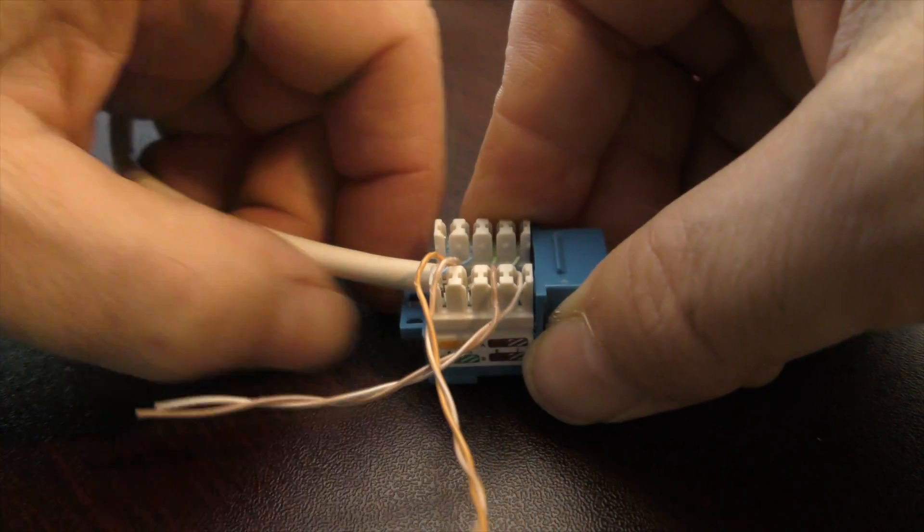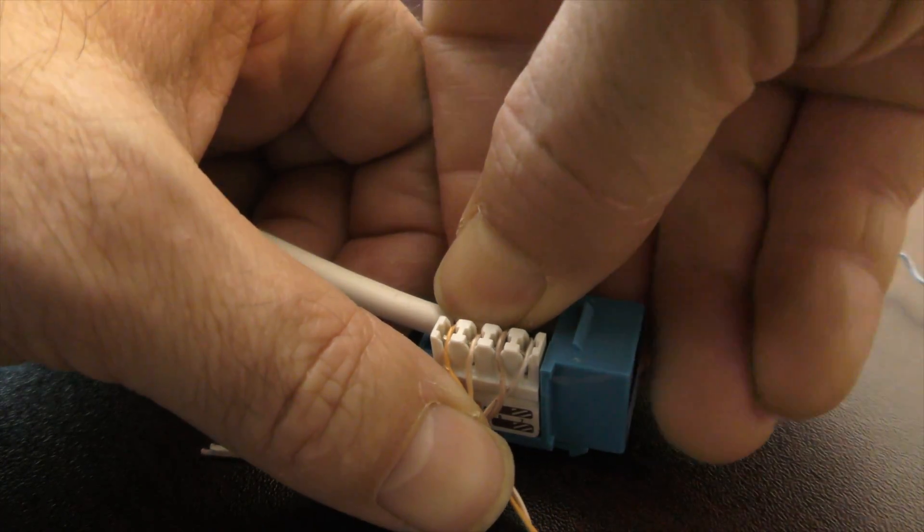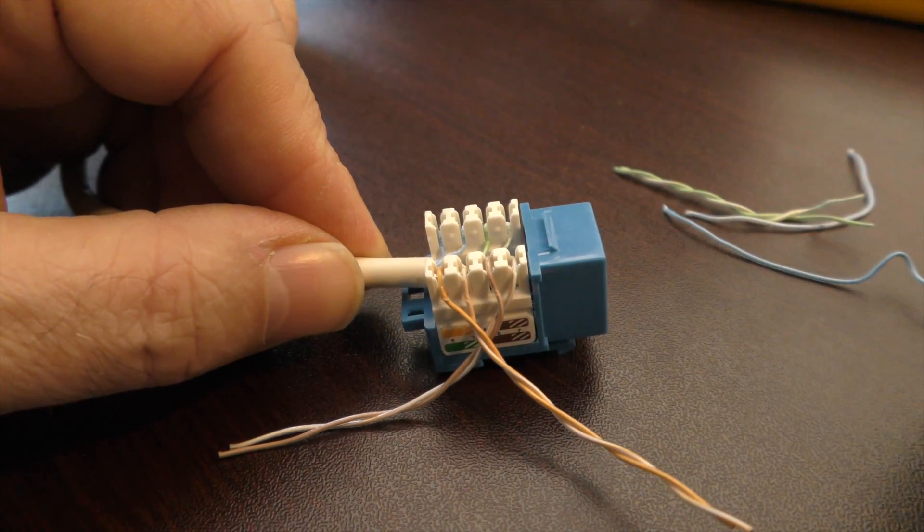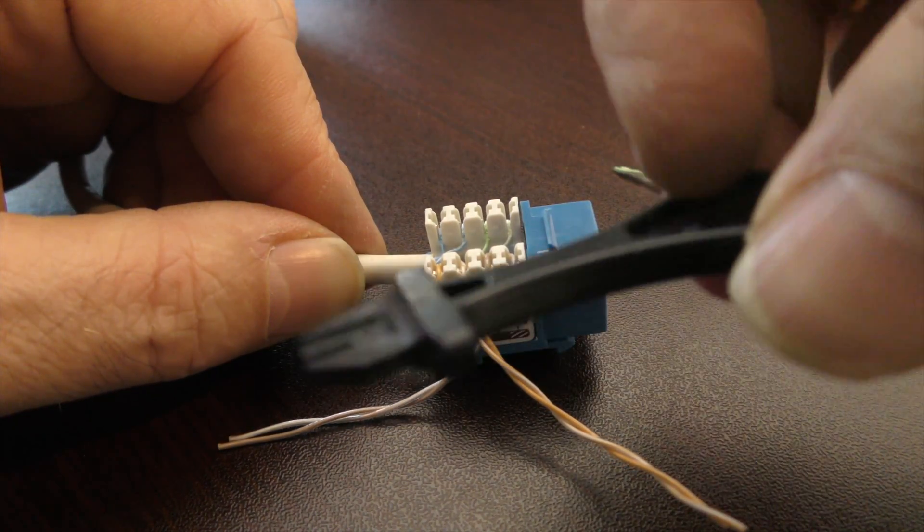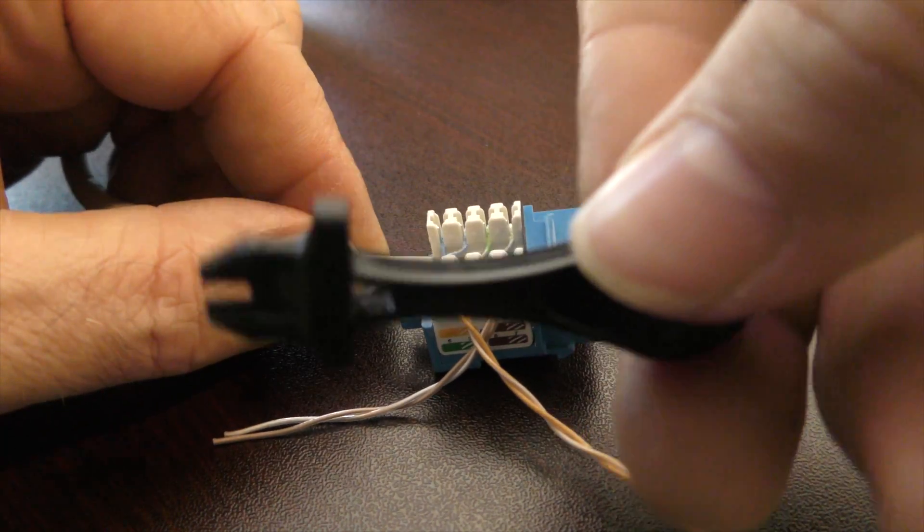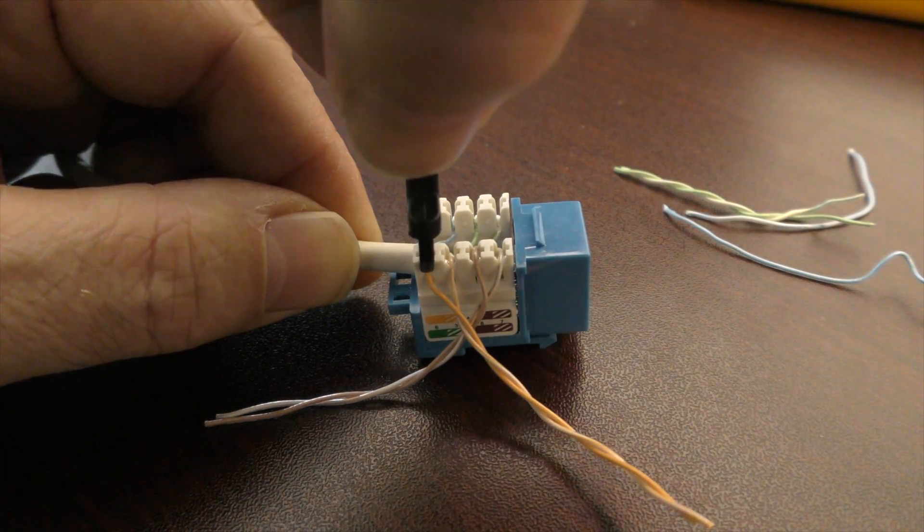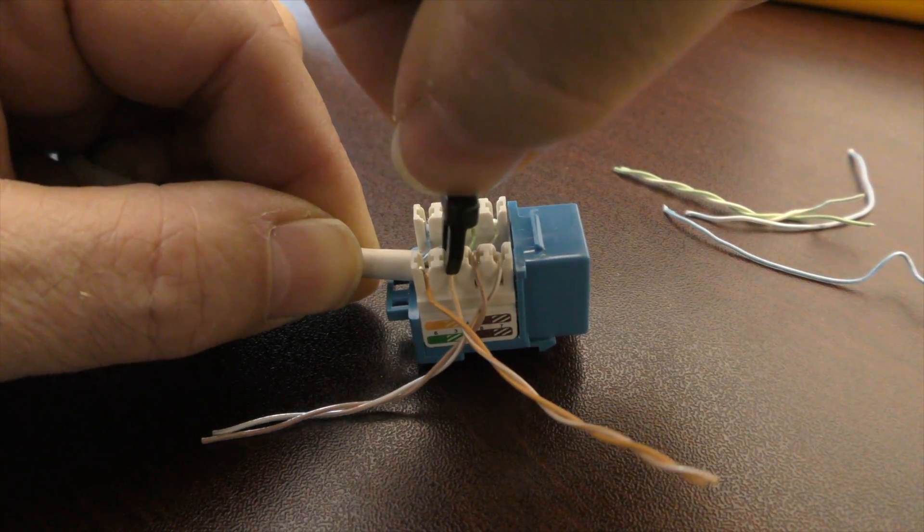Okay, if you do not have a punch tool, a lot of times when you buy these jacks they come with a little tool in the kit. This is not a punch-down or impact tool—it's just a little piece of plastic they give you. You can use it to push in the cable, but it doesn't perforate it.